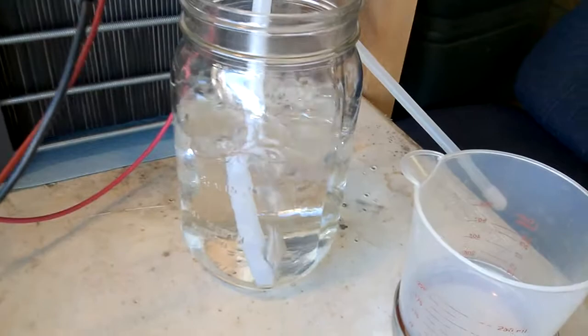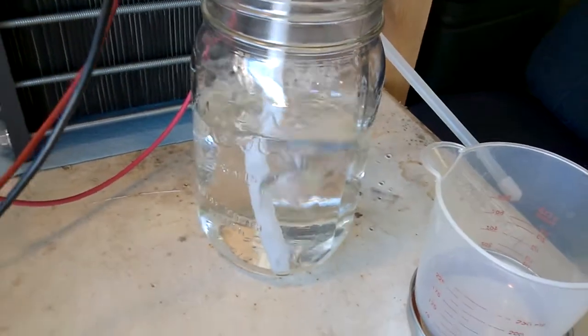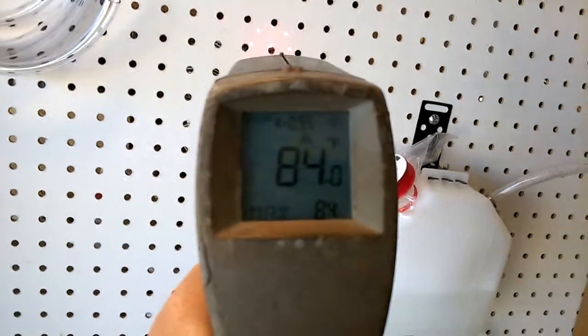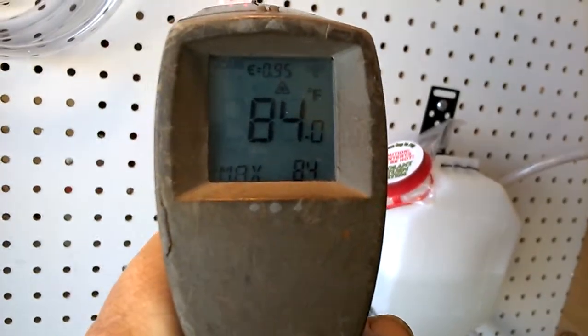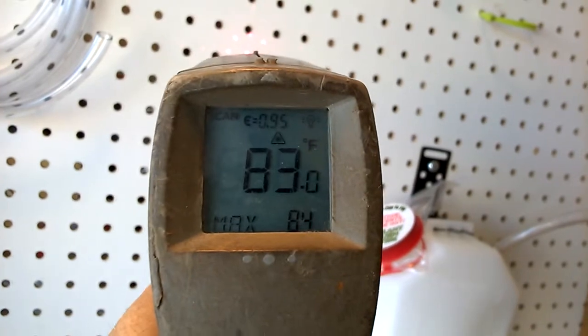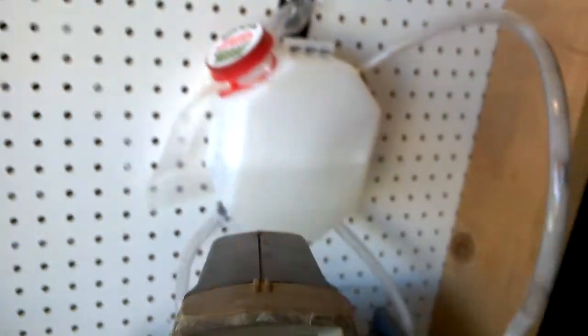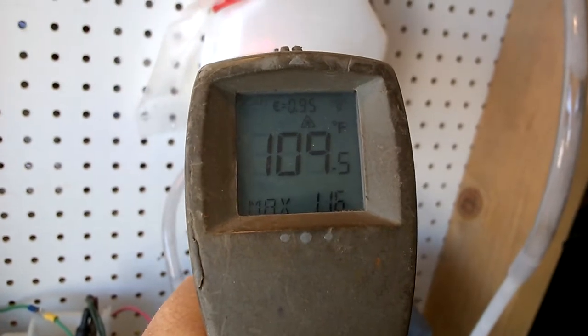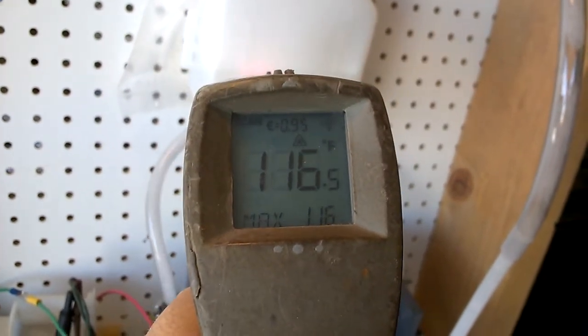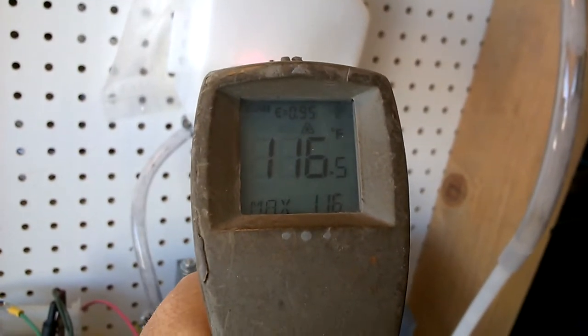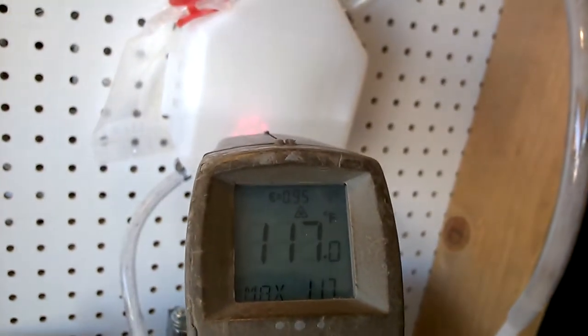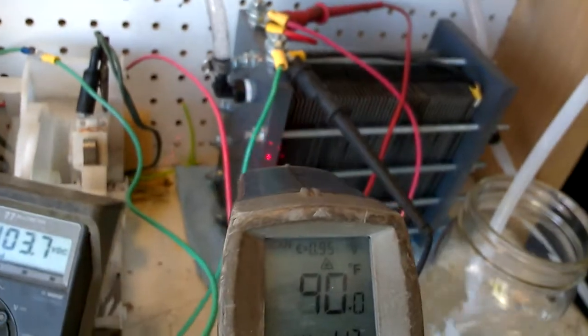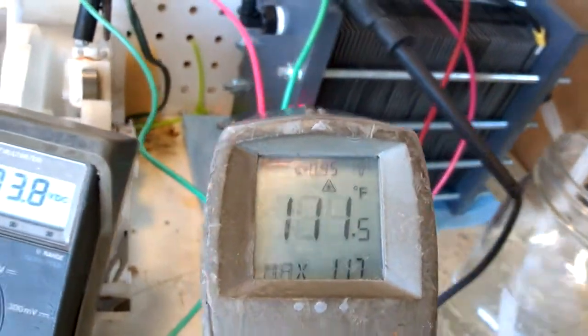And currently on the wall we have 84 degrees ambient temperature. The tank is 113, 109—sorry, 116 degrees. The water level on the tank, 117. Most importantly, we have 95 degrees, 100 degrees at the cell.